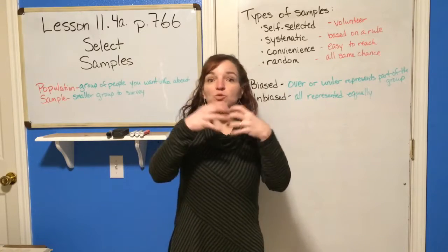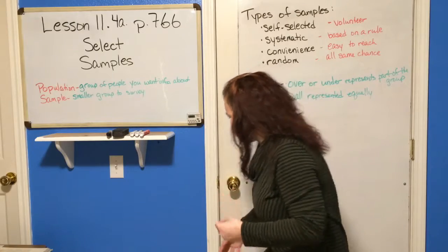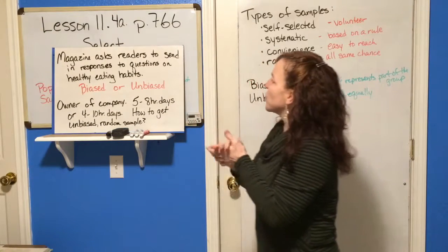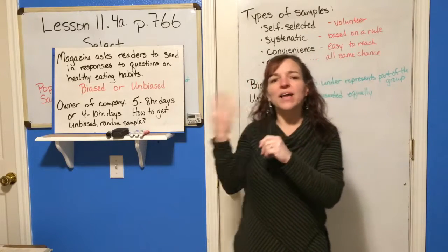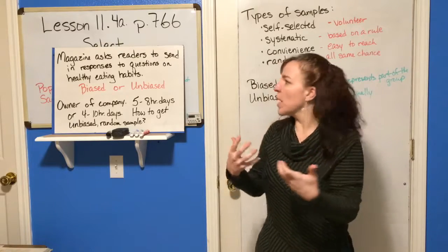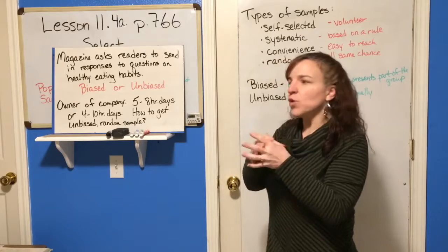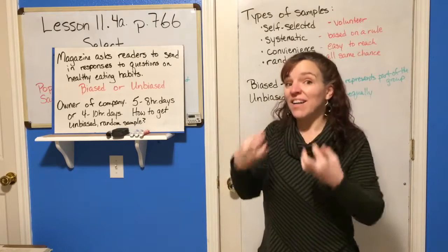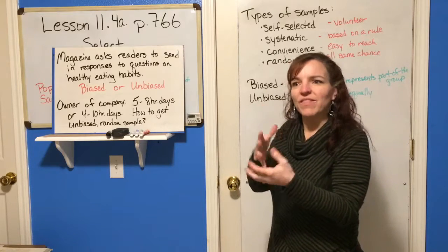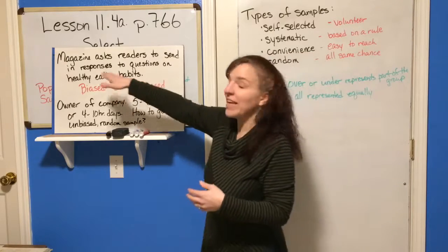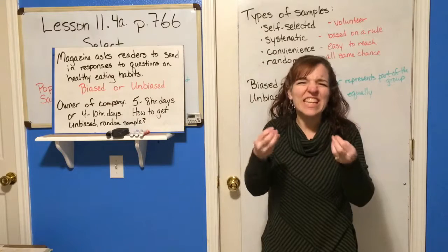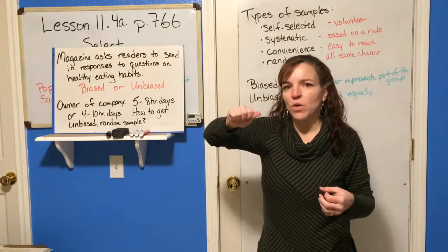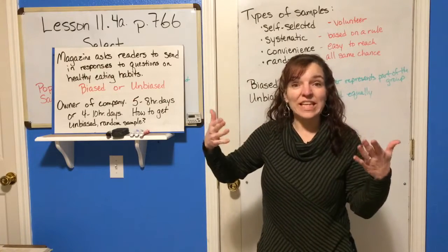Sometimes we have a biased sample, which means there's an over or under representation of part of the group. For example, if a magazine asks readers to send in responses to questions on healthy eating habits, you might think that's unbiased. But the ones who respond are going to be the ones most interested in healthy eating habits. So you're actually going to have a biased sample here, because it takes effort to fill out and send in that questionnaire, and only those interested will do so.